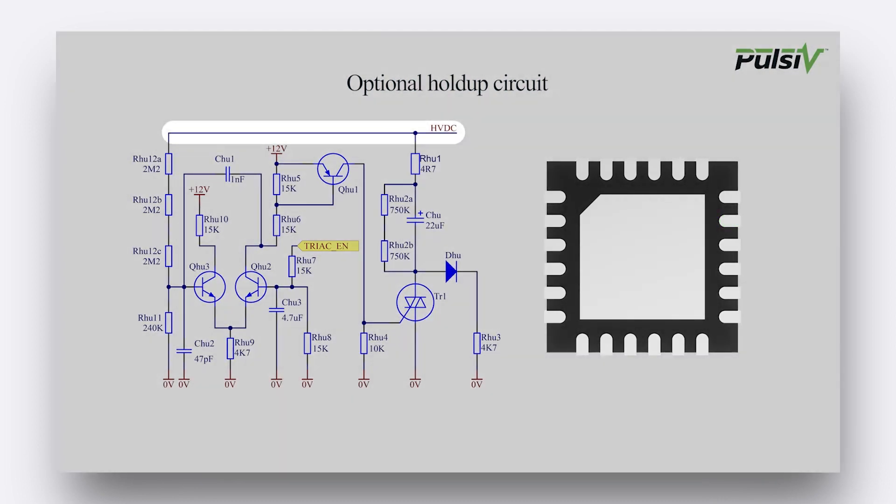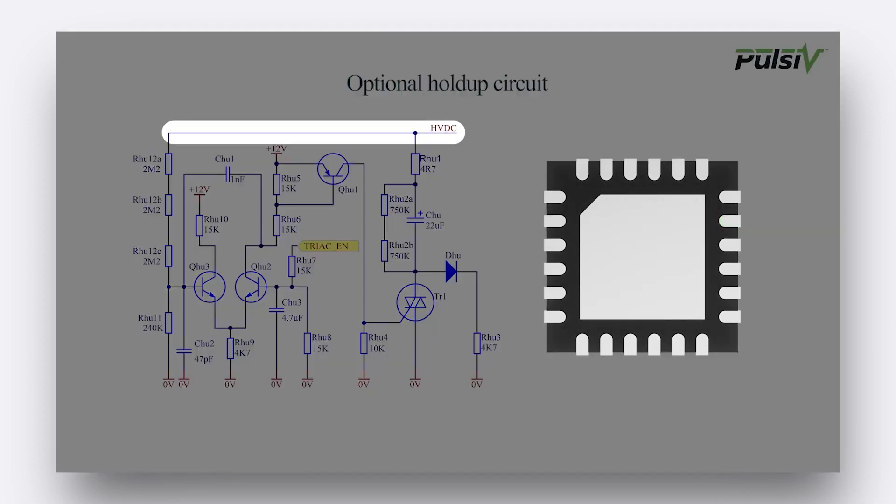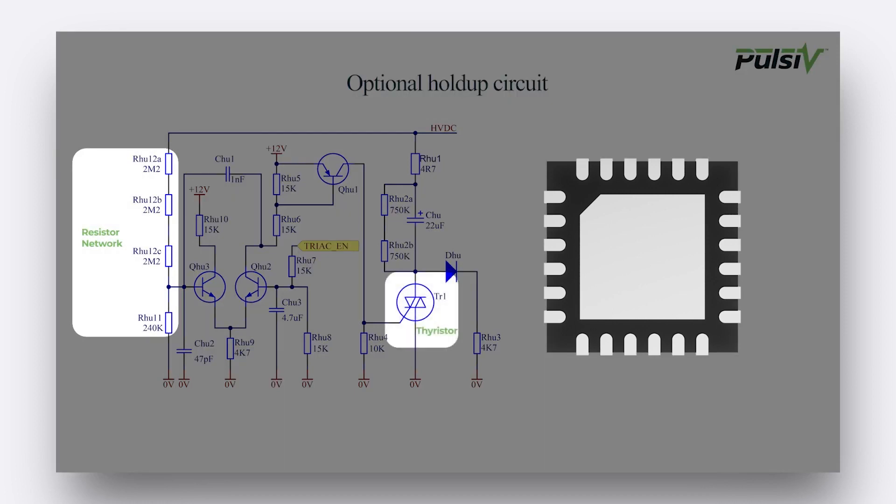The circuit ensures that when the HVDC drops below a threshold, which is determined by the resistor network, a thyristor will be enabled and controlled directly by hardware.